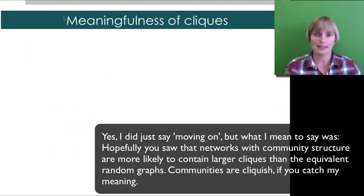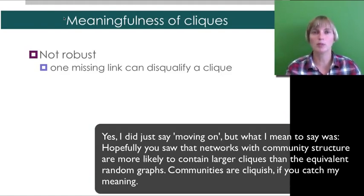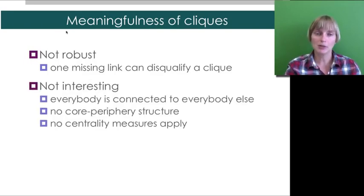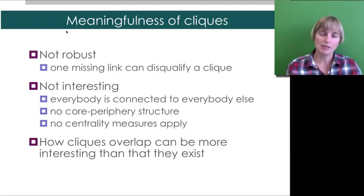How meaningful are these cliques? For one, they're not really robust. So, let's say two people are not friends or didn't talk at the party or something like that. That invalidates that whole clique. It's no longer a clique. And maybe you then miss the fact that it's really a community. The second part is that maybe it's the clique itself is not that interesting. Because everyone's connected to everyone else. You don't have a densely connected core and then more peripheral individuals. All you have is that densely connected core. And there, there's no point in running any centrality measures on this because everyone has the same degree. Any other centrality measure you would like to apply. And finally, how cliques overlap may be more interesting than simply the fact that they exist. And in the last segment of this week's lectures, we'll talk about a clique percolation algorithm that takes advantage of exactly this fact.